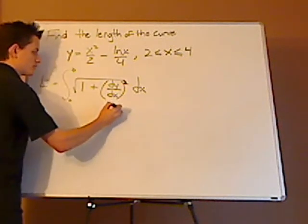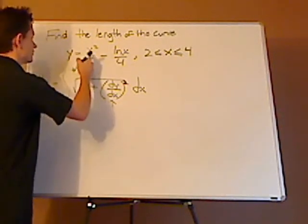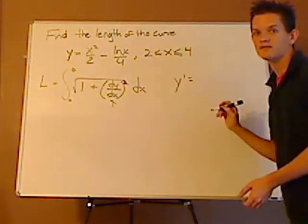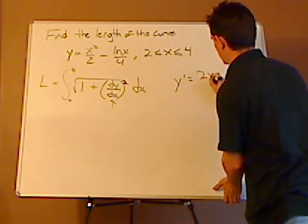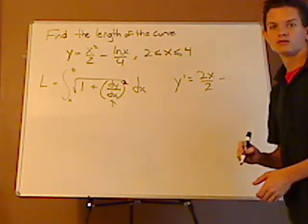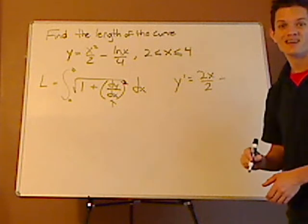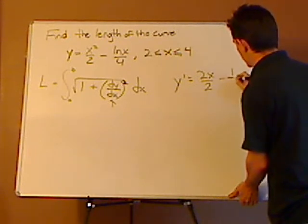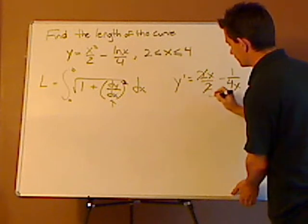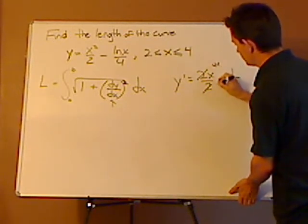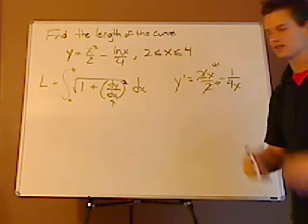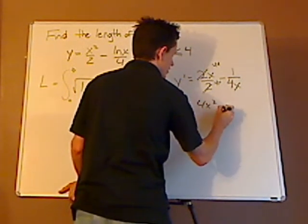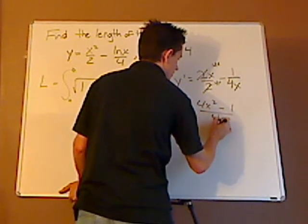What you want to do is you want to first start by finding this. You want to find the derivative. So you take the derivative of this. So you have y prime equals, the derivative of x squared is just 2x minus the natural log of x, the derivative of that is just 1 over x. So that would be 1 over 4x. The 2's cancel out. You multiply this fraction, the top and the bottom, by 4x, so then you can smash them together. So y prime equals 4x squared minus 1 over 4x.